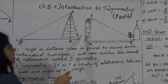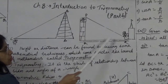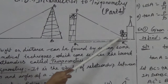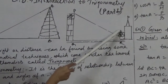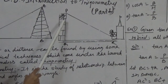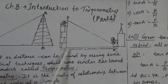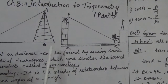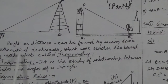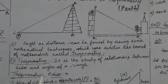In the next example, the girl is sitting on the balcony of her house, which is located on the bank of the river. She is looking down at the flower pot, which is placed on the stairs of the temple. If you know the height at which the girl is sitting, can you find the width of the river? Yes, we can find the width of the river. Height or distance can be found by using some mathematical techniques which come under the branch of mathematics called trigonometry.